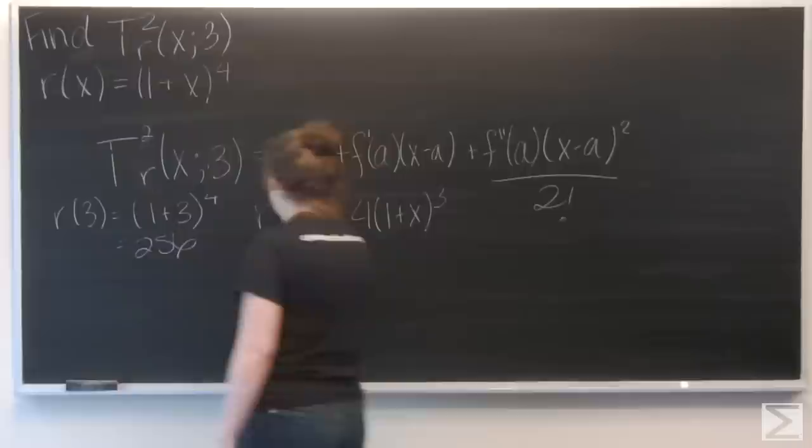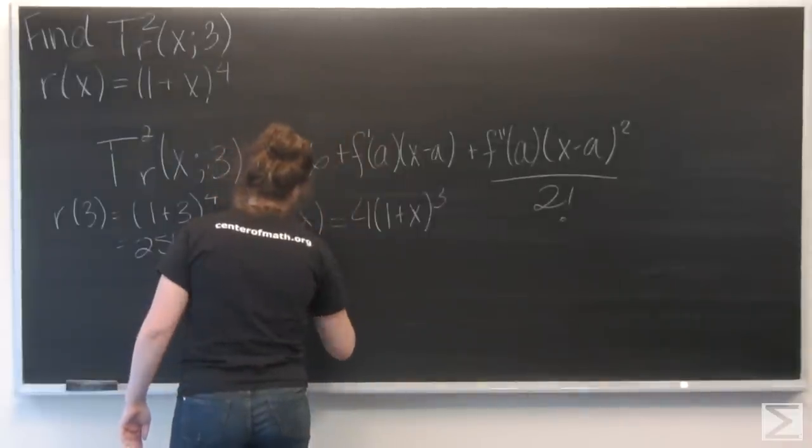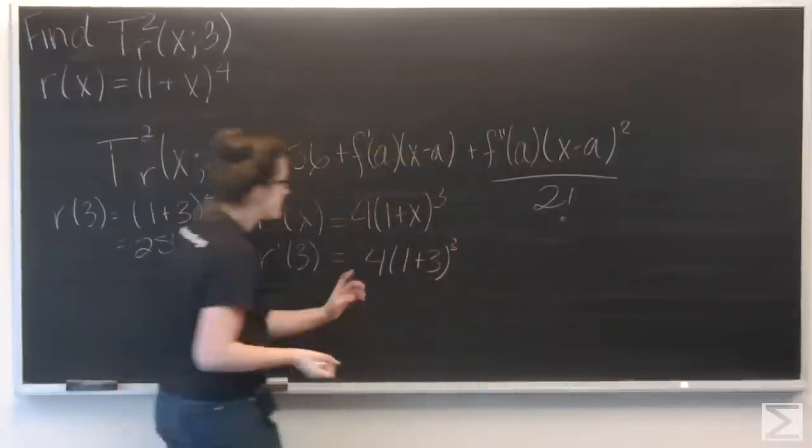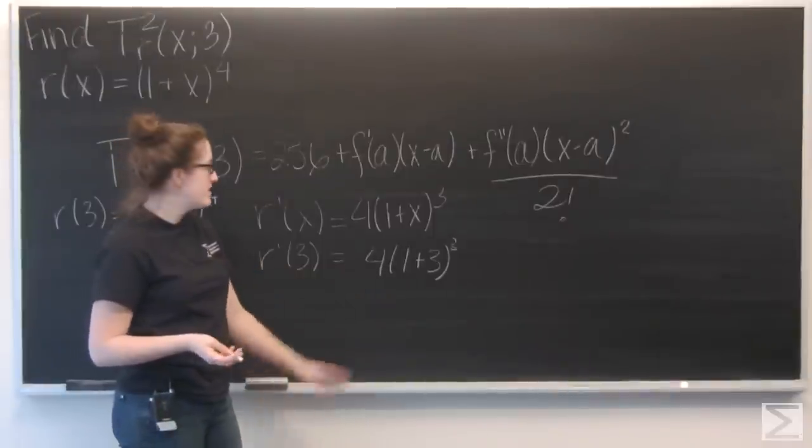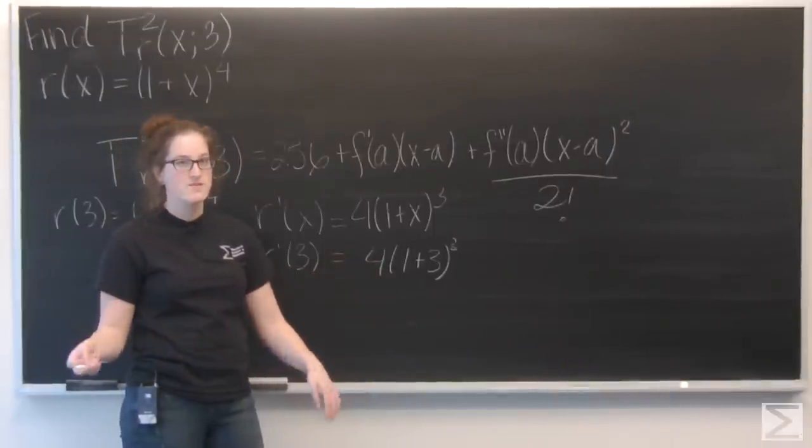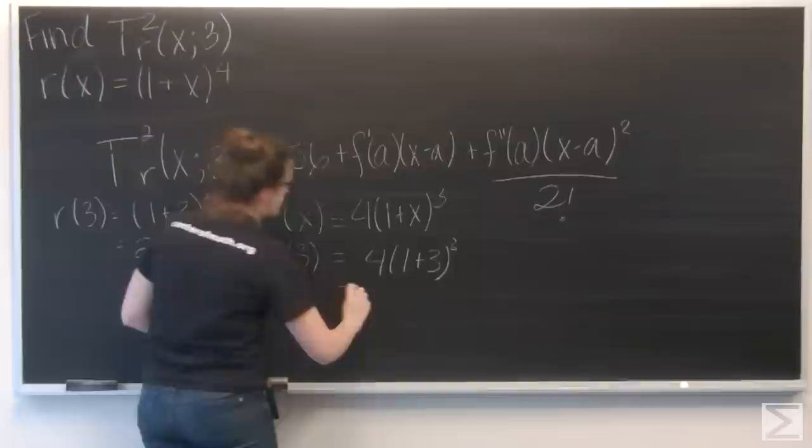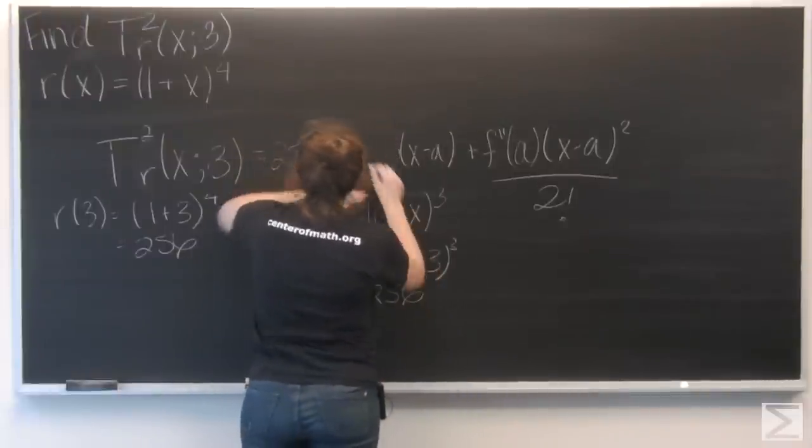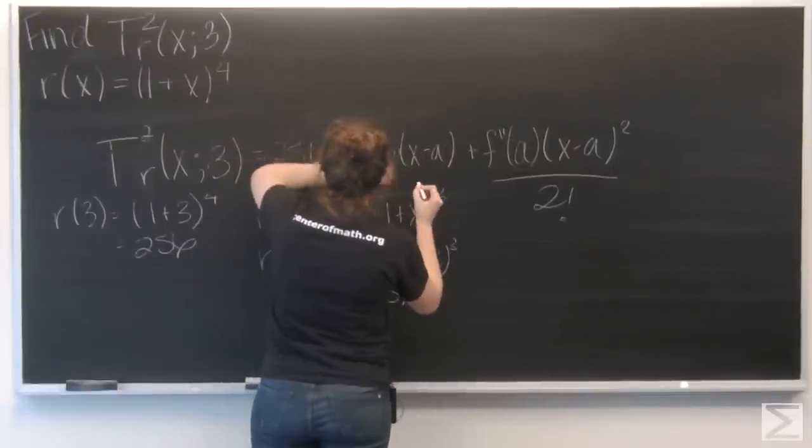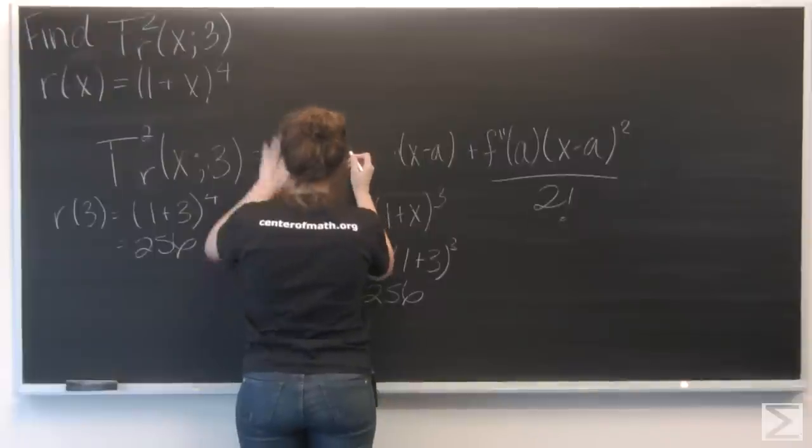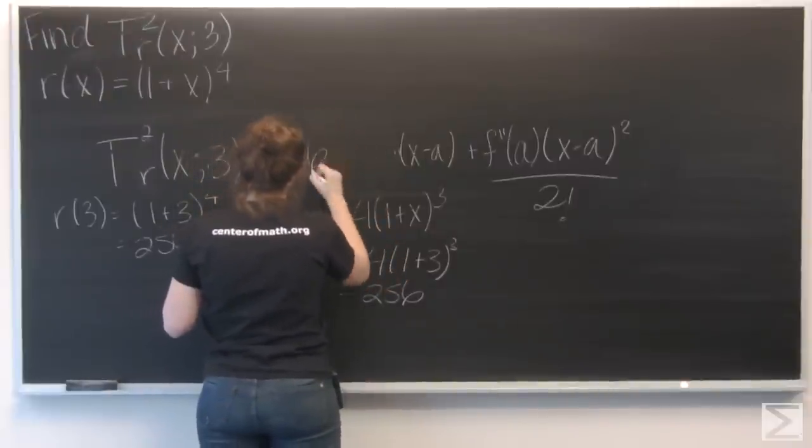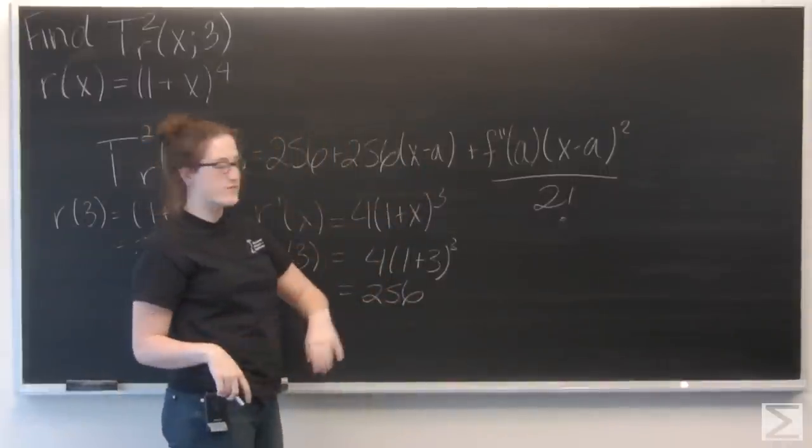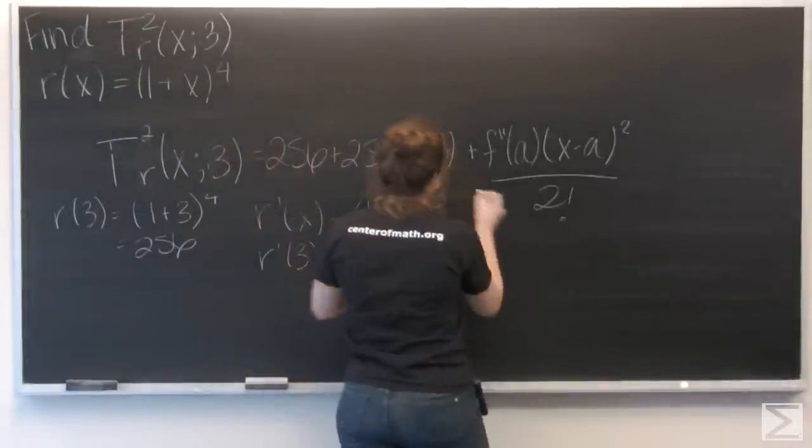Now let's plug in 3. So I have 4 times quantity (1+3) to the third, which is actually 4 to the fourth again, so 256, and I'm going to go ahead and change that a out for 3.